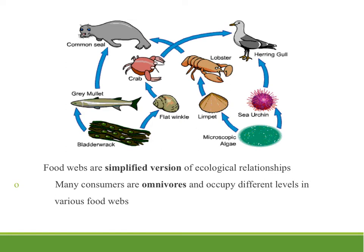Doing the same thing with an aquatic ecosystem, we have a type of microscopic algae — the primary producer in the aquatic system — a phytoplankton. And also we have some larger algae, bladder wrack, which is what we call seaweed. Your primary consumers would be the things that ate those producers directly. So we have a sea urchin, a limpet, a flat winkle, and a gray mullet — all being directly one arrow from the producer to those organisms.